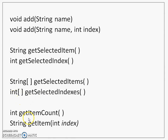As with Choice, getItemCount returns the total number of items in the list box. The getItem method returns the item available at a particular index number as a string.